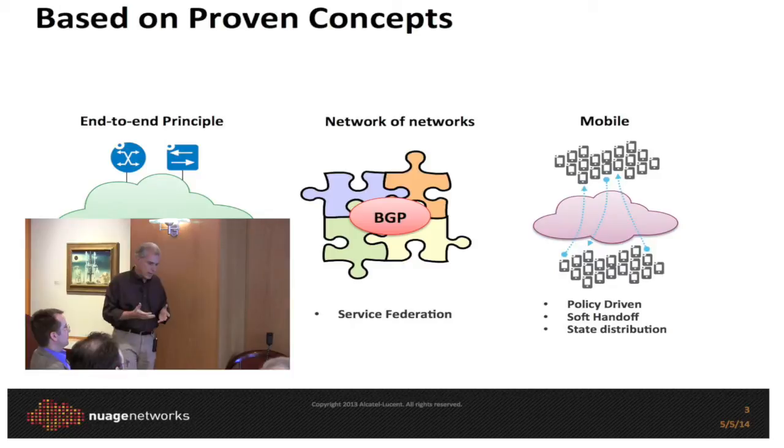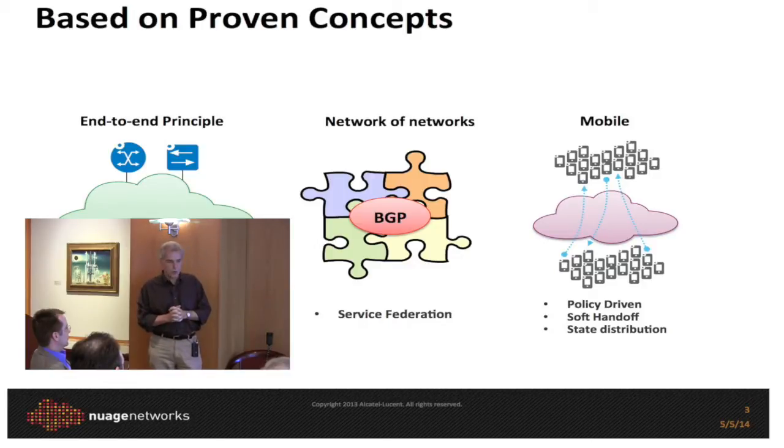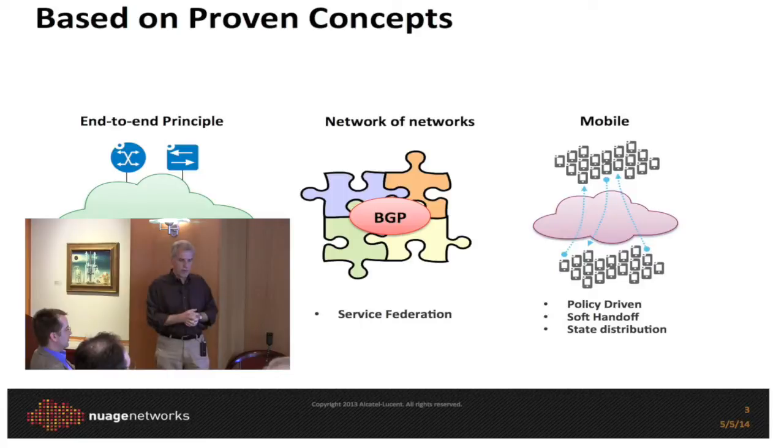The third important concept is policy. When we attach endpoints to the network — virtual machines or physical servers — we need to provide the right policy. The concept we borrowed from the wireless world: it's the same idea as when I activate my cell phone, it registers with the network and downloads a policy. It's a completely distributed architecture where we push the policy as close to the enforcement points as possible, and the enforcement points decide by themselves how to enforce the policy. This is what allows us to scale policy enforcement in very large networks.